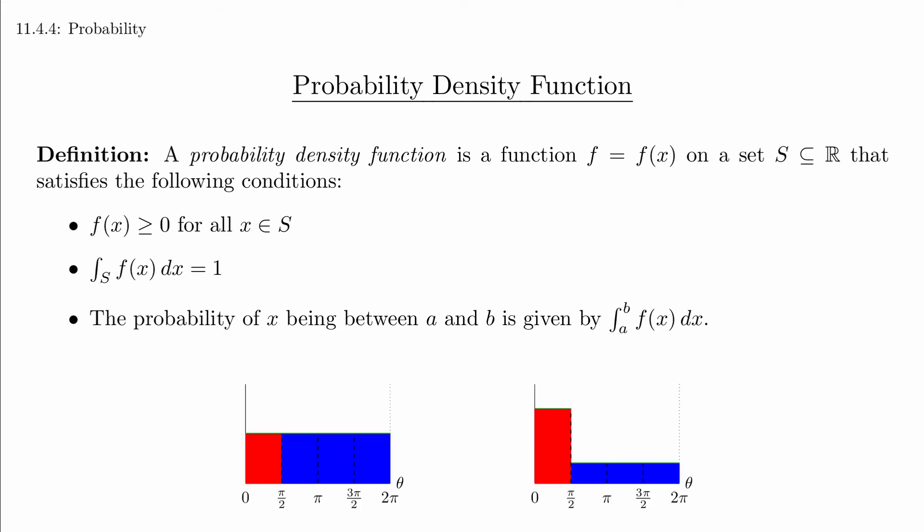The probability density function is the function that gave the heights of the red and blue graphs that we had earlier. For any interval that we choose, the probability of the spinner stopping in the interval is the integral of the probability density function over that interval.